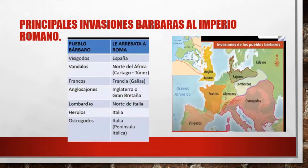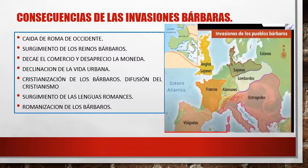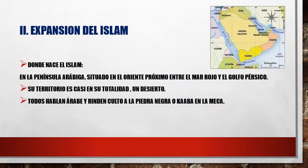En cuanto a la distribución geográfica de las invasiones bárbaras: los visigodos se ubicaron en la península ibérica, en España; los vándalos al norte de África y sur de España; los francos en la Galia; los anglosajones en Inglaterra o Gran Bretaña; los lombardos en el norte de Italia; los hérulos también en Italia; y los ostrogodos en toda la península itálica.